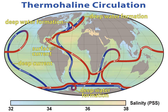The first acoustic measurement of sea depth was made in 1914. Between 1925 and 1927 the Meteor expedition gathered 70,000 ocean depth measurements using an echo sounder, surveying the mid-Atlantic ridge. Sverdrup, Johnson and Fleming published The Oceans in 1942, which was a major landmark. The Sea in three volumes, covering physical oceanography, seawater and geology, edited by M. N. Hill, was published in 1962, while Rhodes Fairbridge's Encyclopedia of Oceanography was published in 1966.